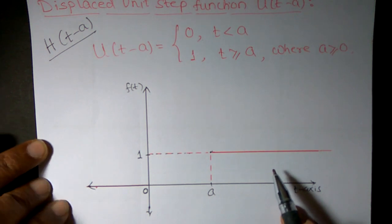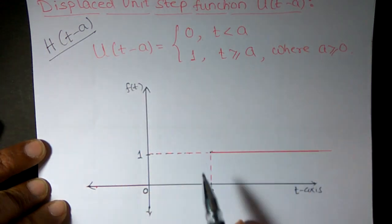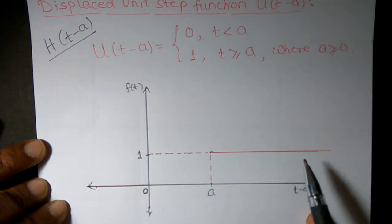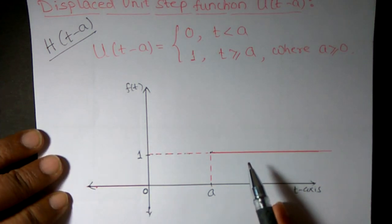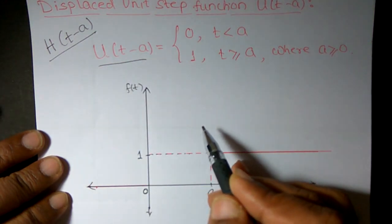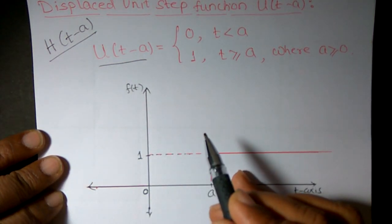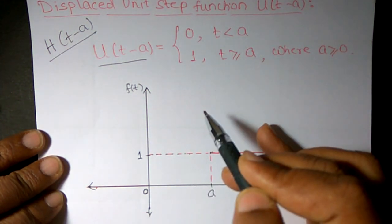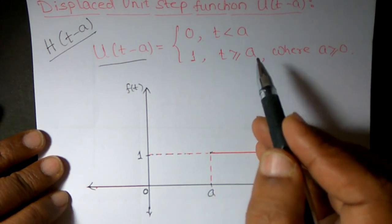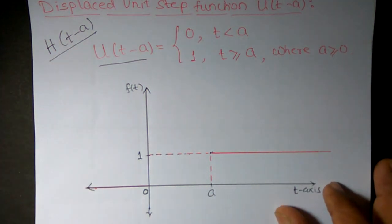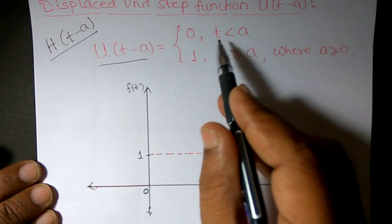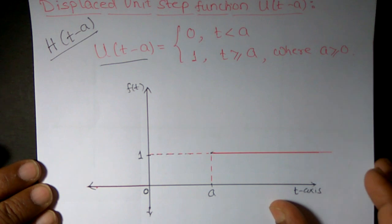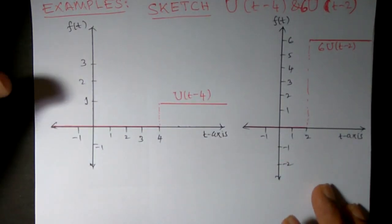So u(t - a) represents a curve that is displaced, or translated, a distance of a units to the right. We can also say that this function behaves like an electric switch: when t is strictly less than a, the switch is off, and when t is greater than or equal to a, the switch is on.